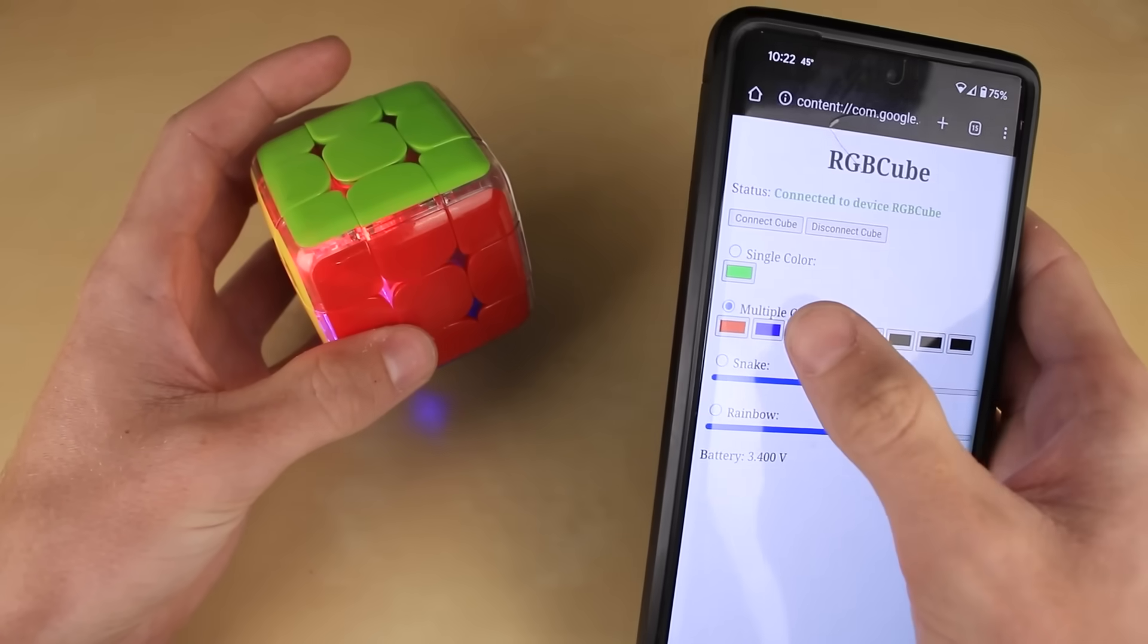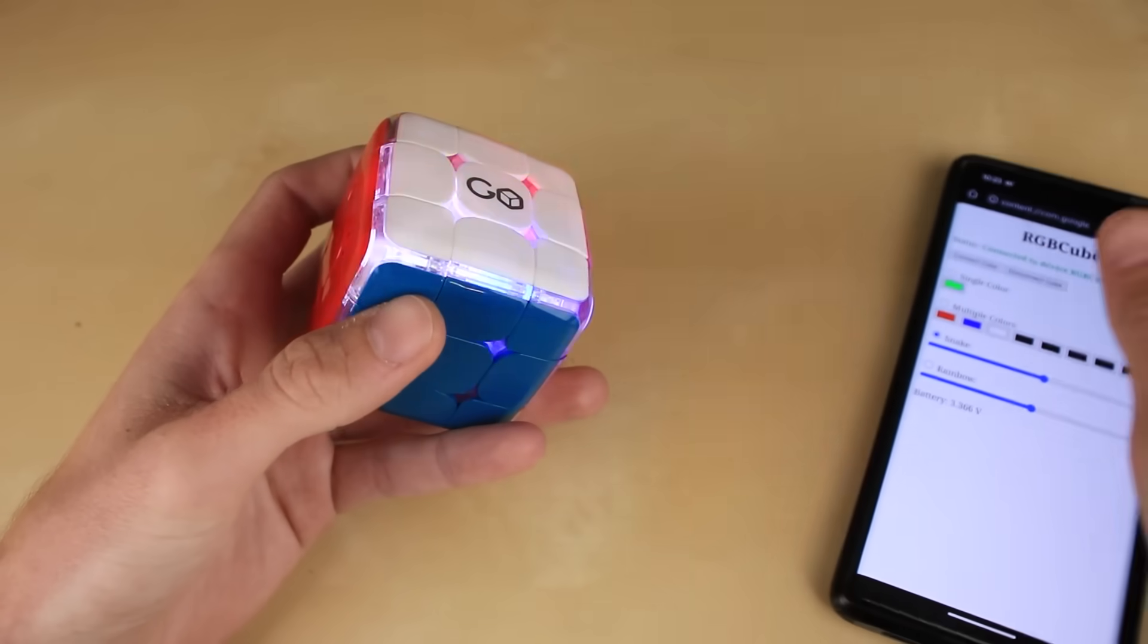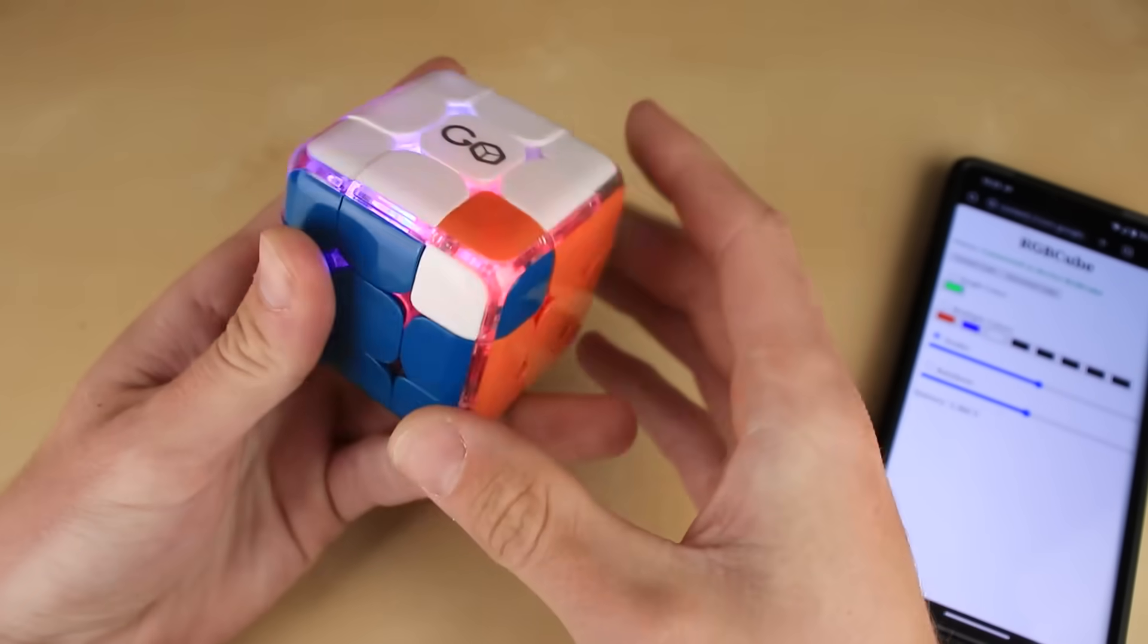We could add, let's say, red, white, and blue like this, and then have police lights. There we go. Now, if only we could make this happen automatically every time you twist a corner or something.